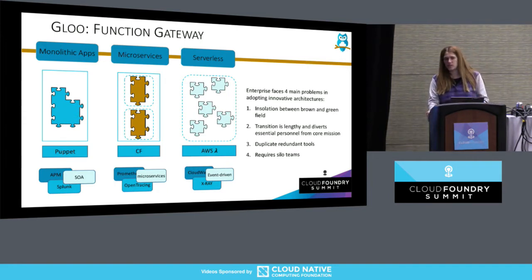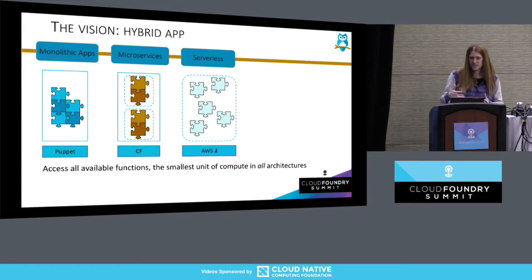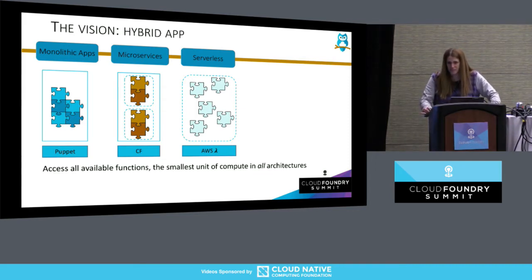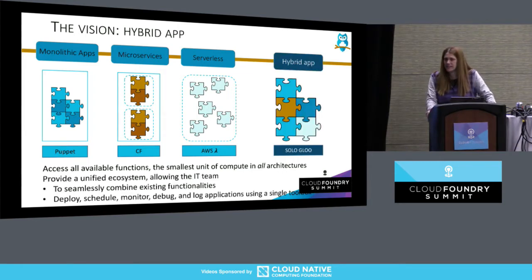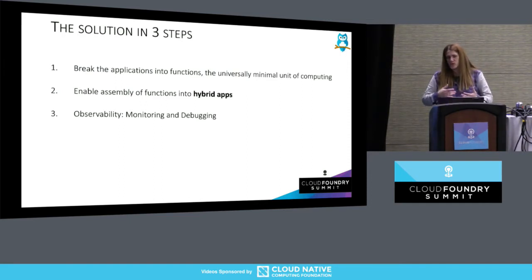What I thought would be very useful is to find the smallest compute unit and cut everything to it. Serverless is functions, and we can look at microservices and monolithic — just the exposed API — as functions too. If we can discover all this ecosystem and route to it, we can actually migrate or mix applications running in different places. I'm starting with solving how we glue it, and then we'll talk about open tracing and service mesh for observability.